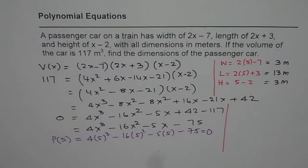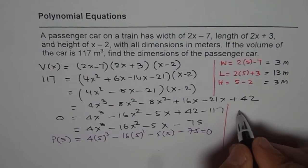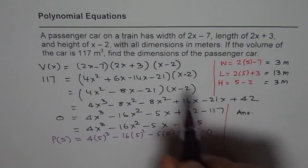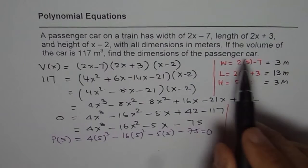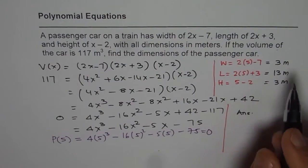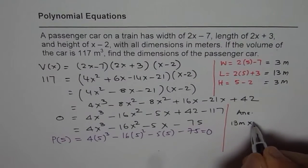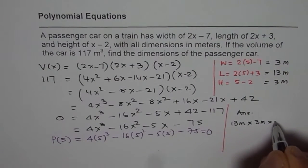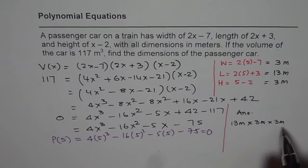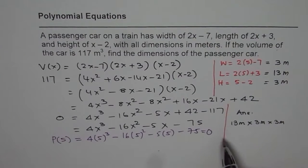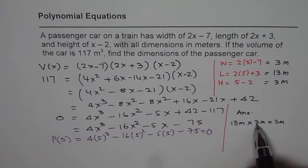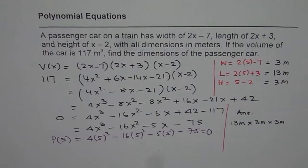So the dimensions of the passenger car are length by width by height, which is 13 meters by 3 meters by 3 meters. It is good practice to multiply and check your answer: 3 times 3 is 9, and 9 times 13 is 117. That is indeed correct. That is how you solve polynomial equations.